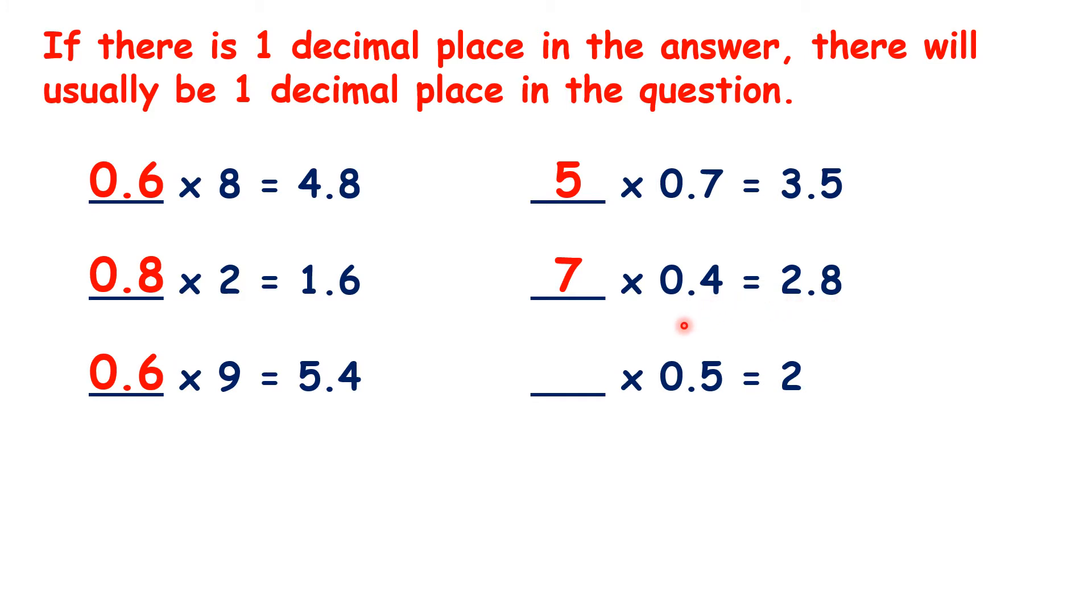Now, this last question looks different because we have a whole number as our answer, but we know that 2 is the same as 2.0. So now this question looks similar to the questions above. We know that 4 times 5 is 20, so 4 times 0.5 is 2, or 2.0.